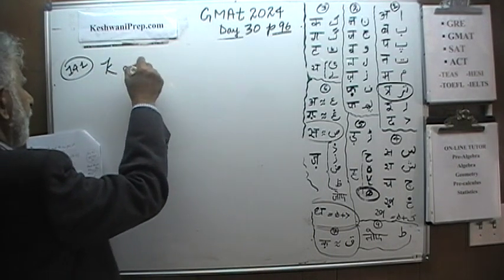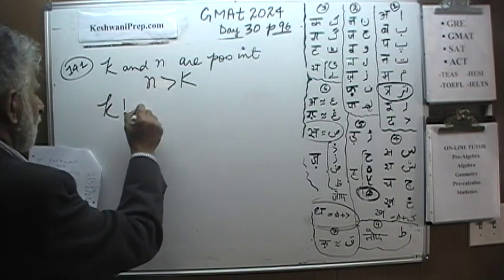We are told, number 141. We are told that k and n are positive integers. They are positive integers. We are further told that n is more than k. And here's what we want to find out. k factorial plus n minus k times k minus 1 factorial. And here's what we are being asked.